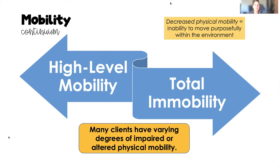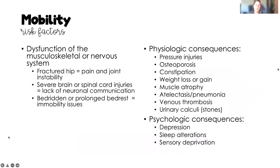When we think about dysfunction of the musculoskeletal or nervous system, risk factors might include a fractured hip that is painful and unstable so the client can't move, a severe brain or spinal cord injury where communication from the brain along nerve pathways is disrupted, or a client who has been bedridden on prolonged bed rest and is now experiencing consequences of immobility.